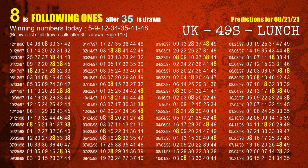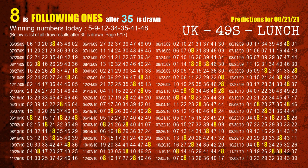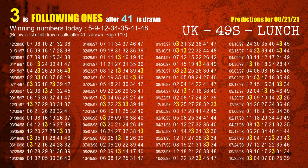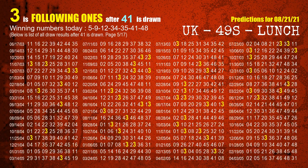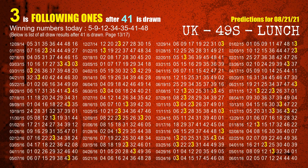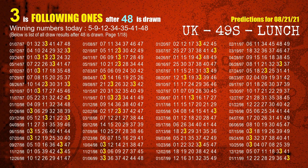The fifth winning number is 35 — the most frequently following units digit is 8 when 35 is the winning number in the last draw. The sixth winning number is 41 — the most frequently following units digit is 3 when 41 is the winning number in the last draw. The booster winning number is 48 — the most frequently following units digit is 3 when 48 is the winning number in the last draw.